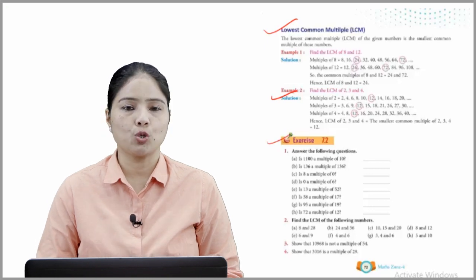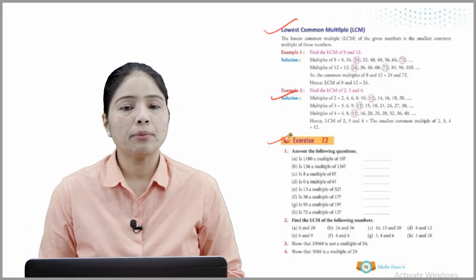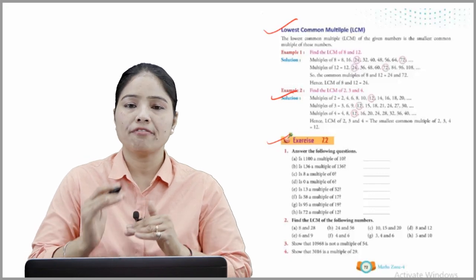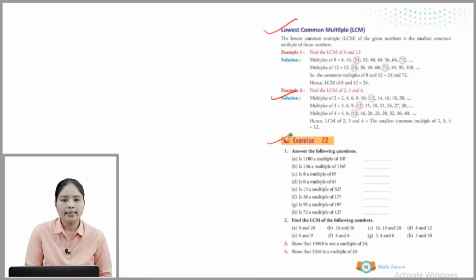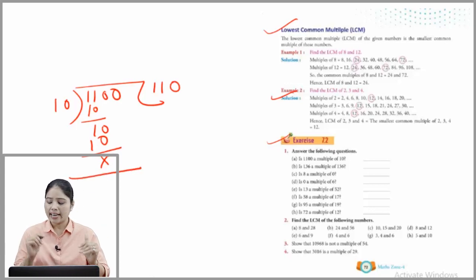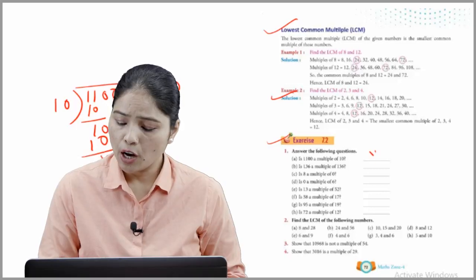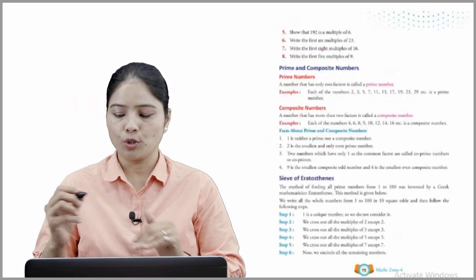Now move on to Exercise 7.2. Answer the following questions. Is 1100 a multiple of 10? We divide 1100 by 10 — there is no remainder left. So yes, 1100 is a multiple of 10. The other questions you have to solve on your own.